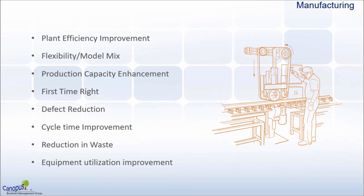Other popular projects include improvement of production capacity, quality aspects such as first time right and defect reduction, improvement of cycle time, reduction of waste, and improvement of overall equipment utilization. Projects relating to OEE — that is Overall Equipment Effectiveness — are also covered in Six Sigma in many organizations.